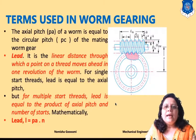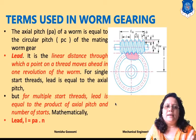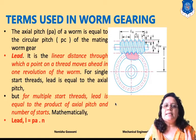Axial pitch of the worm is equal to the circular pitch of the mating worm gear. As we already discussed in helical gear, PA is the axial pitch and PC is the circular pitch — both are equal mathematically.